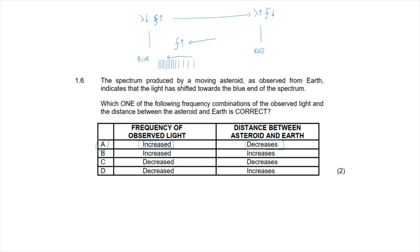This is always true: when light is blue shifted, the two objects are moving closer together; when light is red shifted, the two objects are moving further apart.